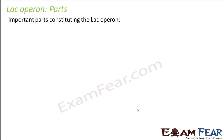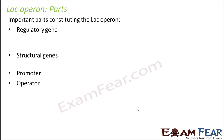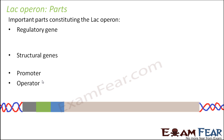The important parts that constitute the lac operon are the regulatory gene and the structural genes, along with the promoter and operator. The promoter is here, the operator is here, and this is where we have the structural genes. Let's start from the beginning with the regulatory gene, since regulatory genes produce the regulatory proteins.